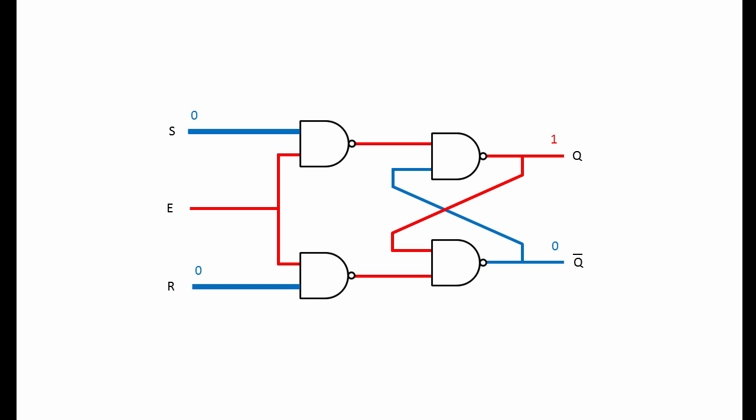A gated SR latch is an active high latch. In other words, both S and R are normally at low voltage, representing zeros, and a pulse is required at one of these in order to set or reset the latch.